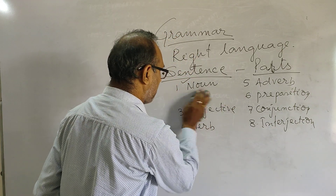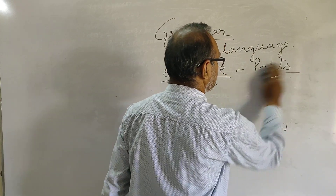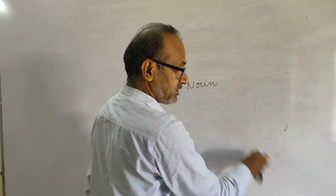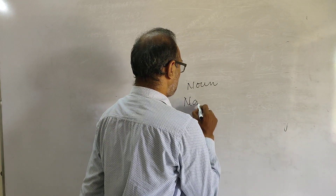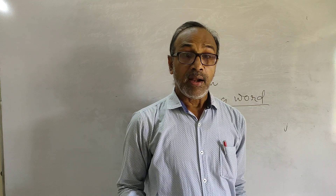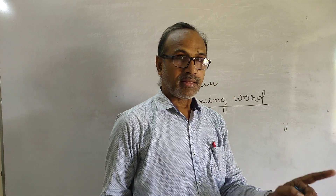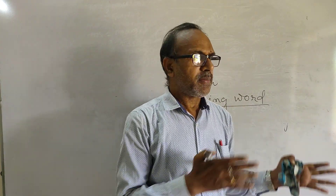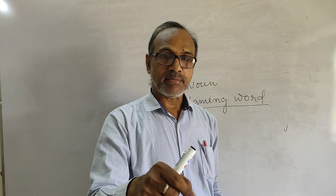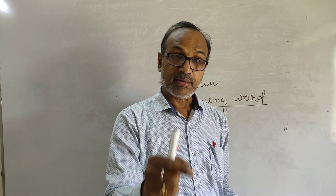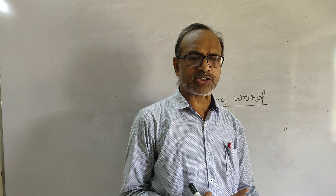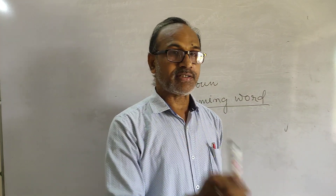Now let us move to the first one, that is the noun. The definition of noun is: any naming word is a noun. What do you mean by naming word? A naming word means anything that has a name. The things around us, the people around us, the places around us — whatever around us that has a name — with that name we identify the thing, the place, or the person. And that name is called noun. So anything that you see, that you feel, that you touch, that will be a noun if it has a name of identification.